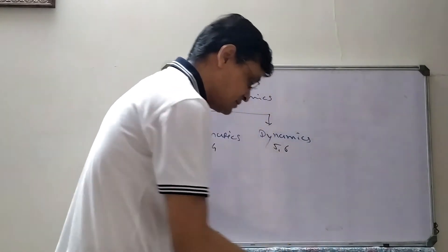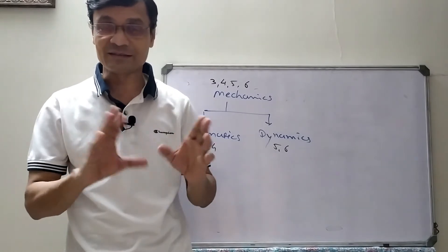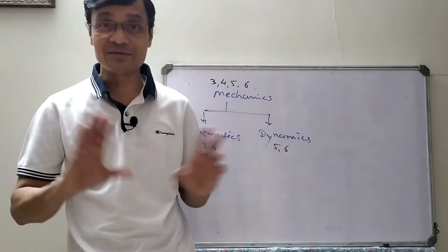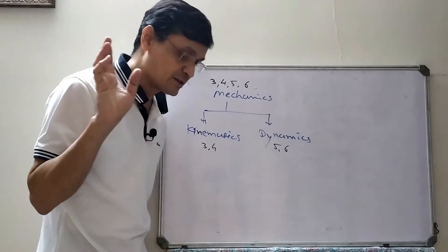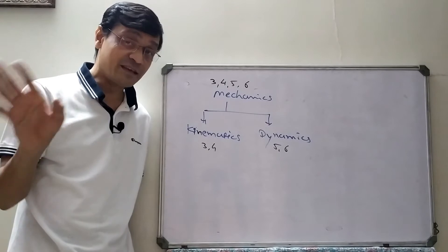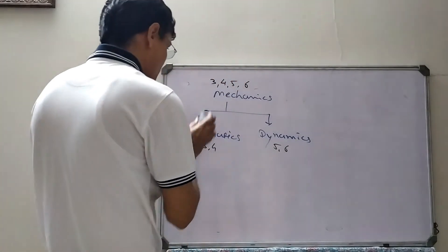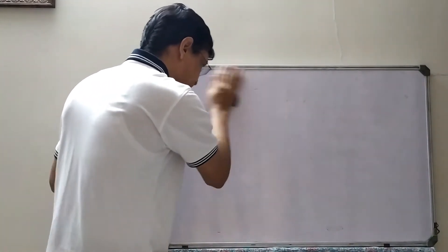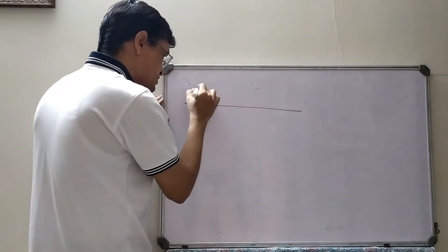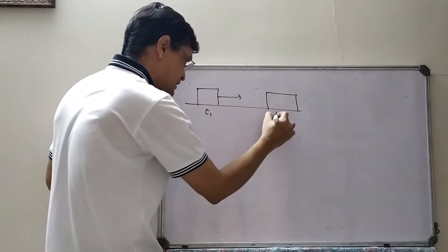Without the concept of particle, you cannot explain motion easily, but with it you can solve many problems. Remember: a particle has mass but no dimension and has no real existence. Physics introduces this concept so that when an object performs straight-line motion, we can use a single particle to represent it.